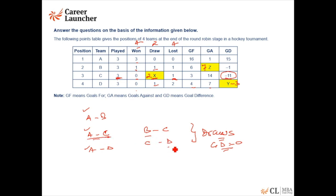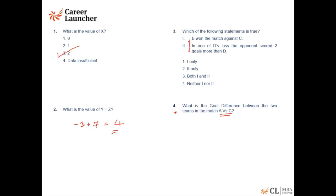So for the draw matches, the goal difference has to be 0. For team C, in 2 matches, goal difference is 0. That means whatever goal difference we see here would be on account of team C's match against A only. Because against B and against D, there's a goal difference of 0. So this is going to be a goal difference of 11 or minus 11. In the match A versus C, the goal difference will be 11.